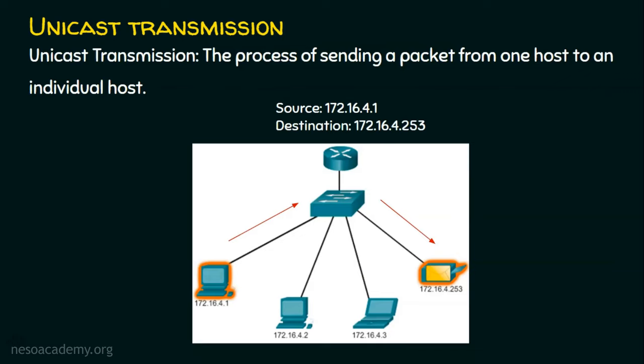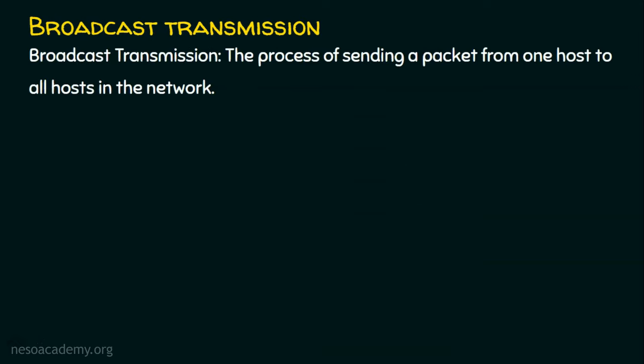Why? Because the destination address is a unicast address. Coming to the next type, which is broadcast transmission — the process of sending a packet from one host to all hosts in the network. In a broadcast transmission, if a sender is sending a packet, except the sender, all others will be receiving this packet. That's why this transmission is called a broadcast transmission. We have two types of broadcast transmission: limited broadcast and directed broadcast.